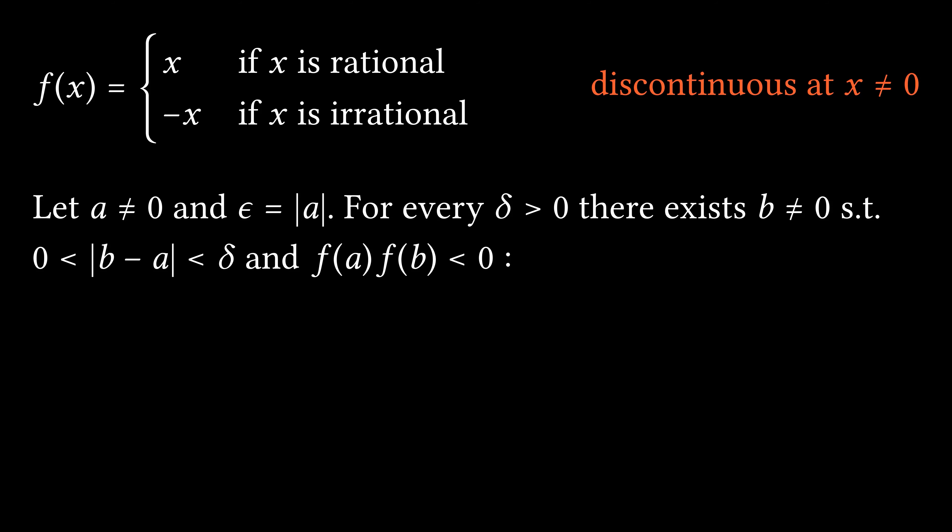Conversely, if A is irrational, we can take B to be an arbitrarily close rational number. Then the distance from f(B) to f(A) equals the distance from f(B) to zero plus the distance from f(A) to zero. This is because f(B) and f(A) have different signs.